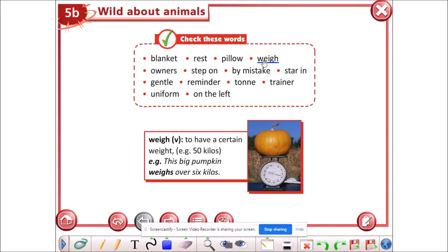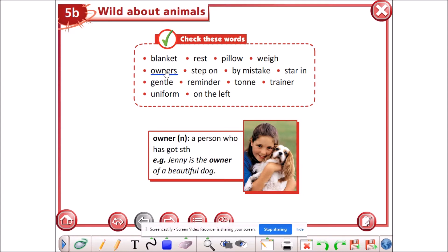Weigh, weigh is a verb. It means to have a certain weight. This pumpkin, big pumpkin, weighs over six kilos. Owner, owner is a noun. It means a person who has got something, like Jenny is the owner of a beautiful dog.